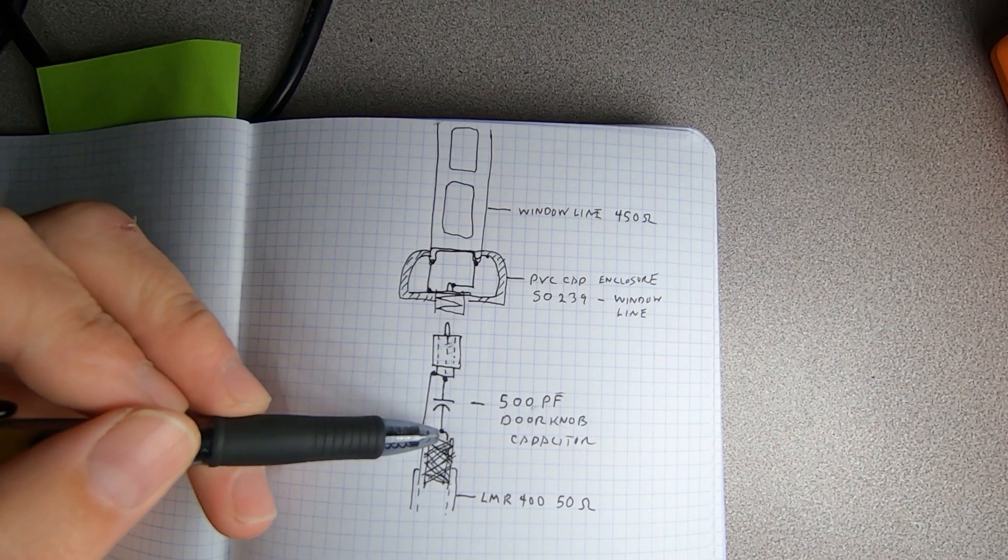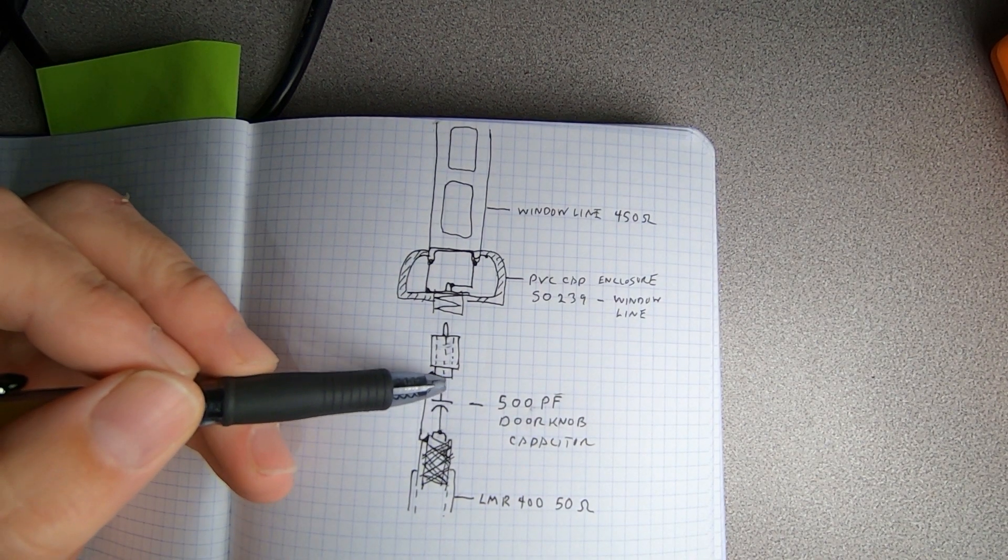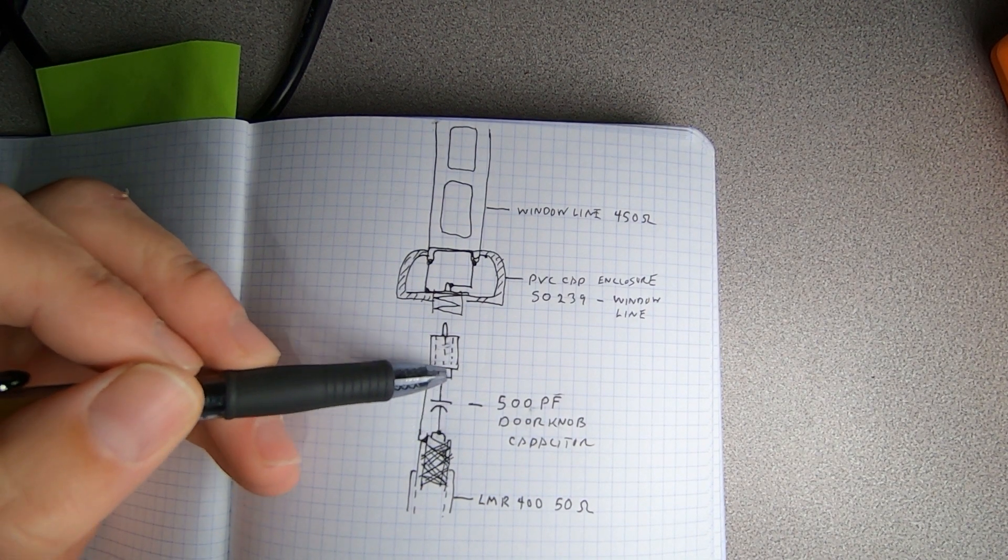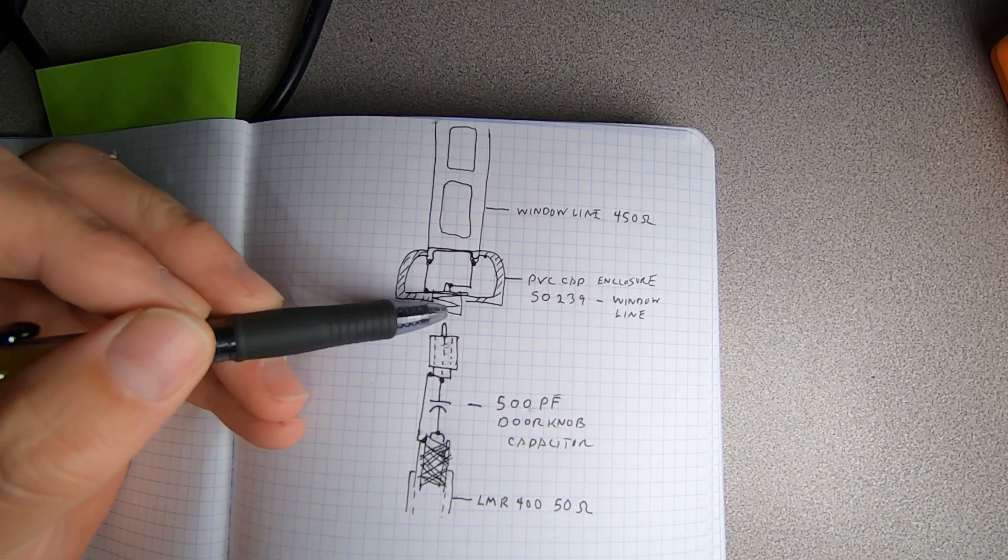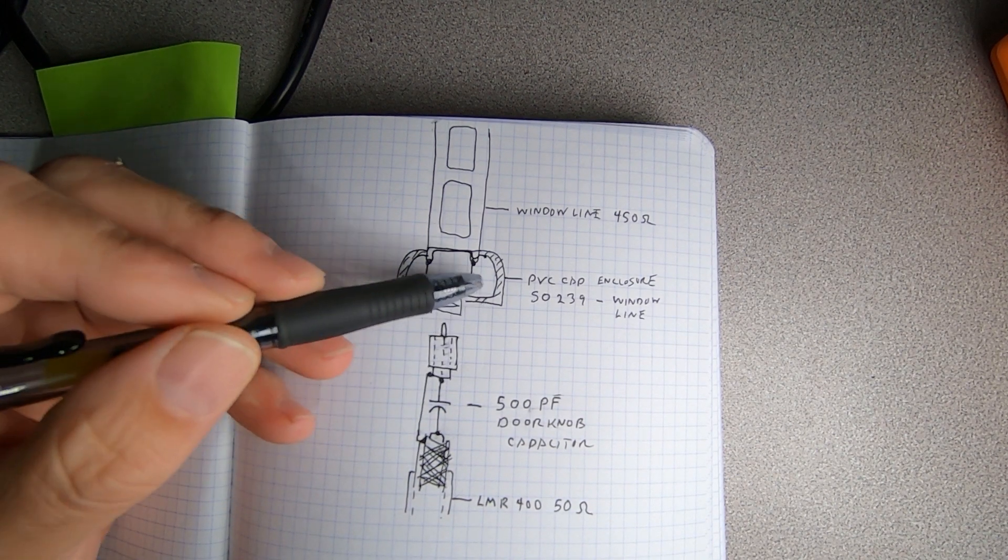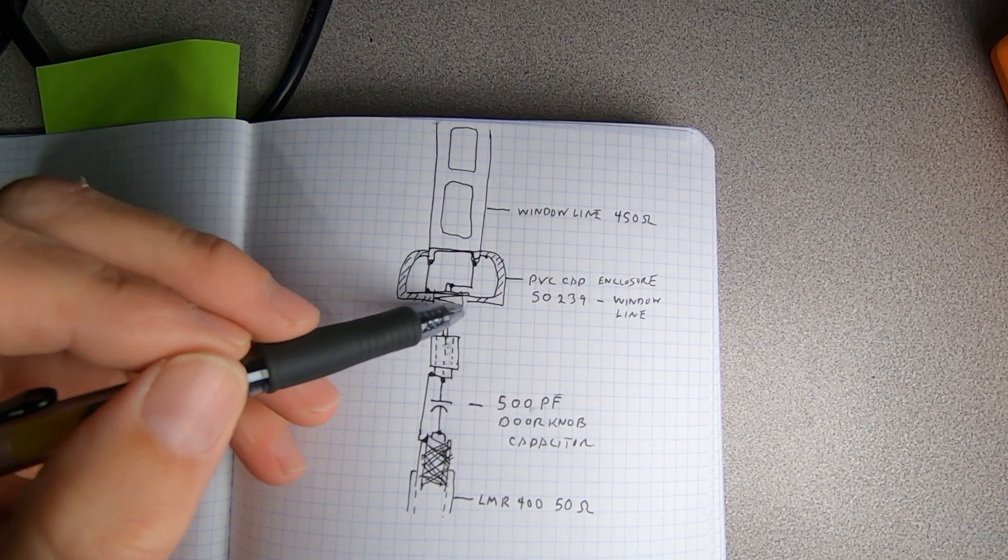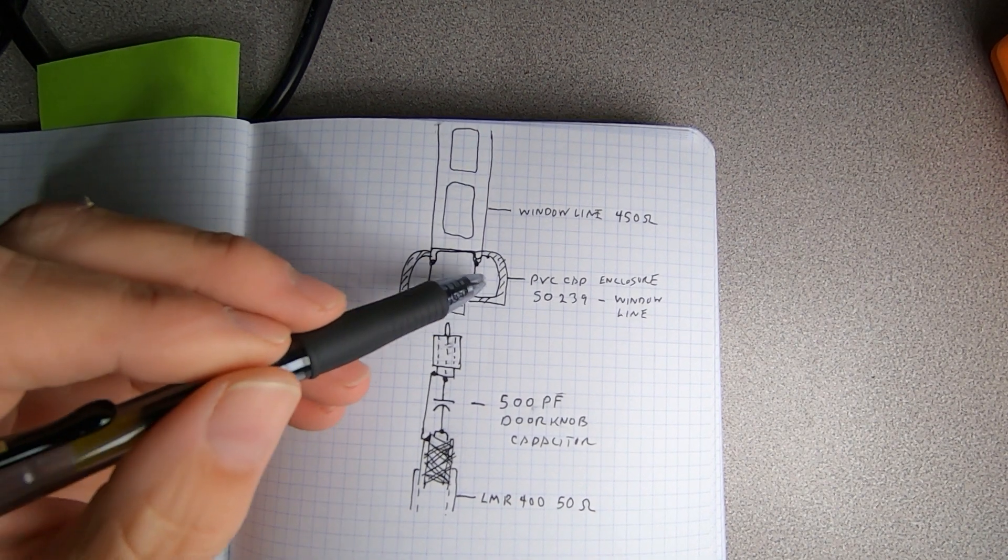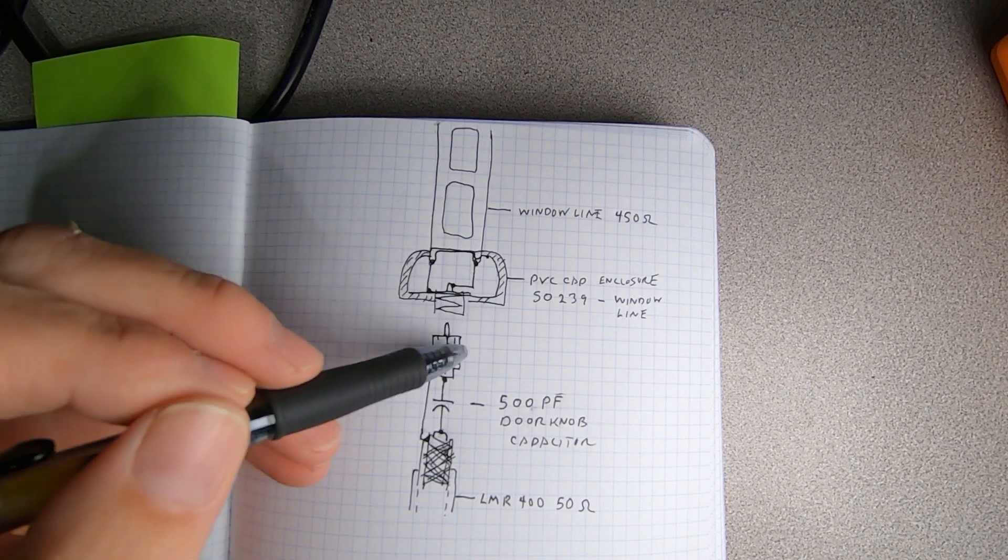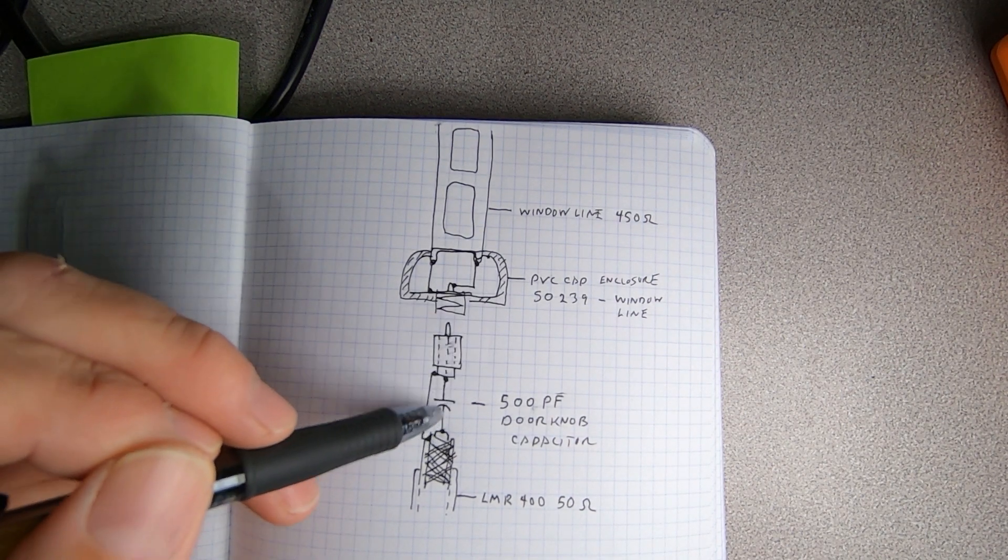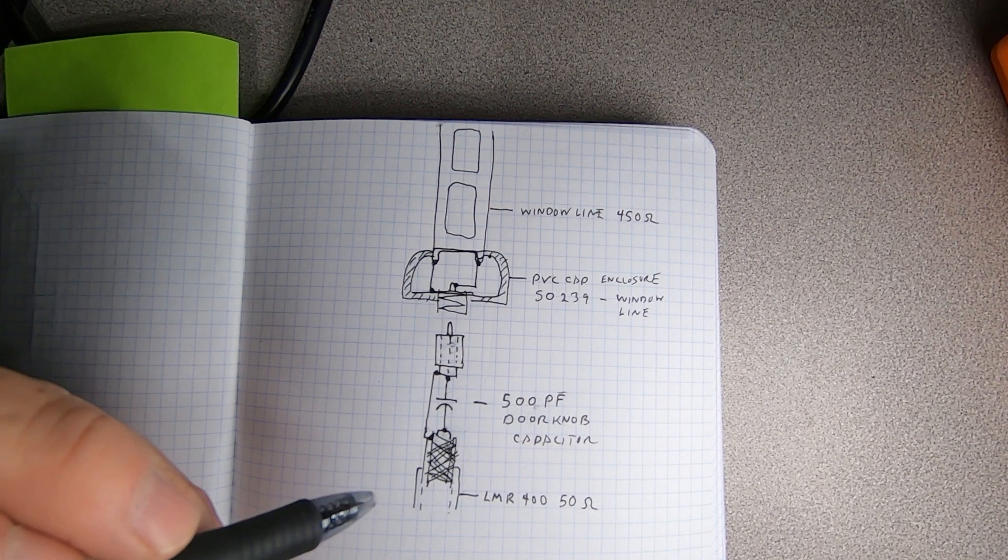So what we're going to do is we're going to place a 500 picofarad high voltage doorknob capacitor in series with the center conductor and do it before our interface between the 450 ohm feed line and our SO-239 here. Now if you had a balun you could do the same thing with your one-to-one balun right here and just place the capacitor in the same spot.